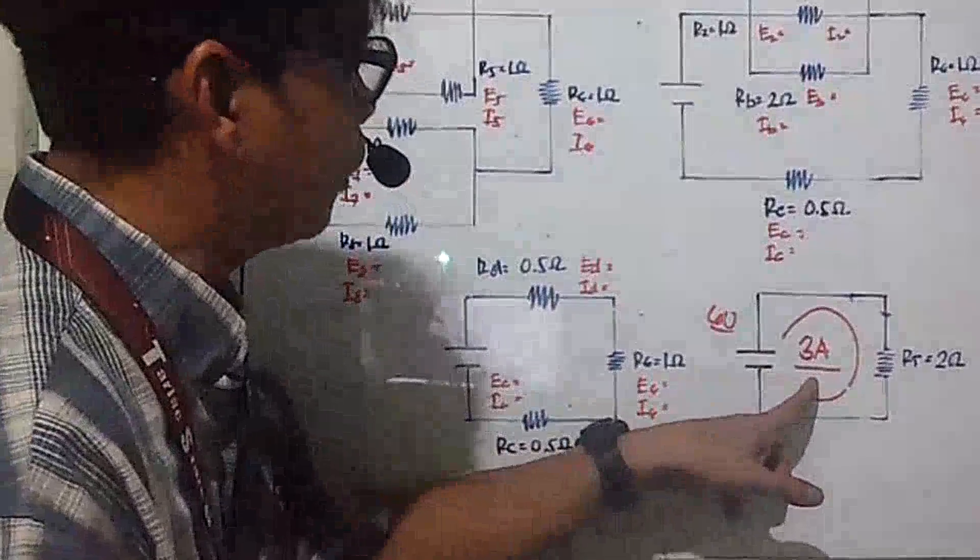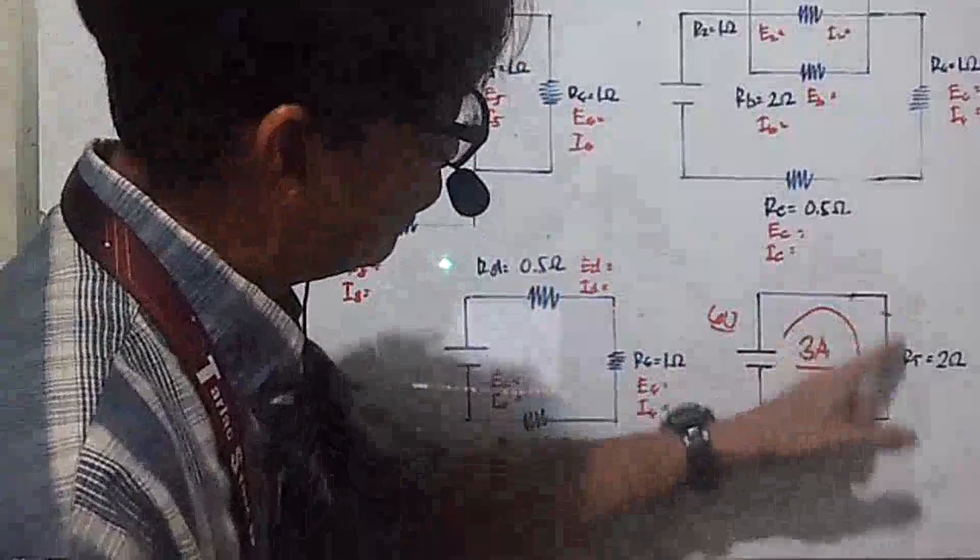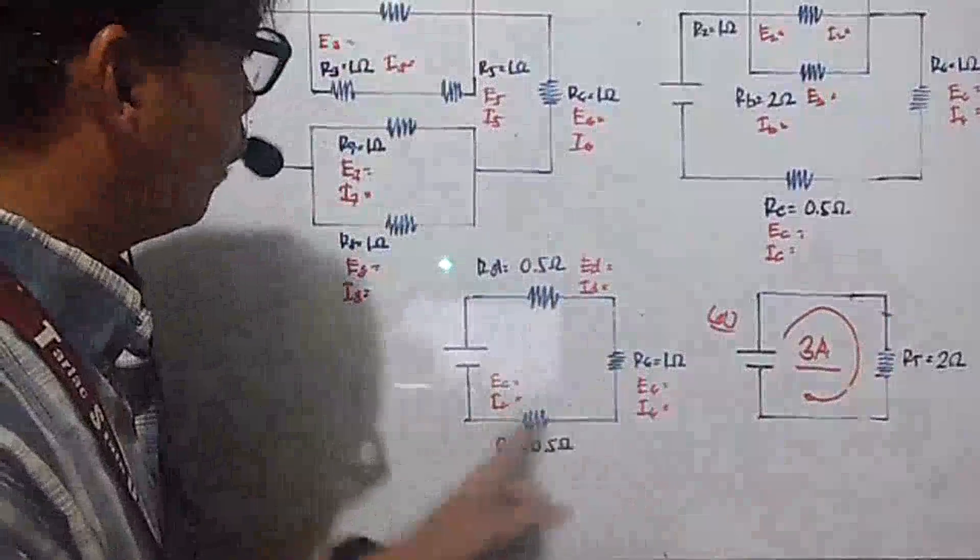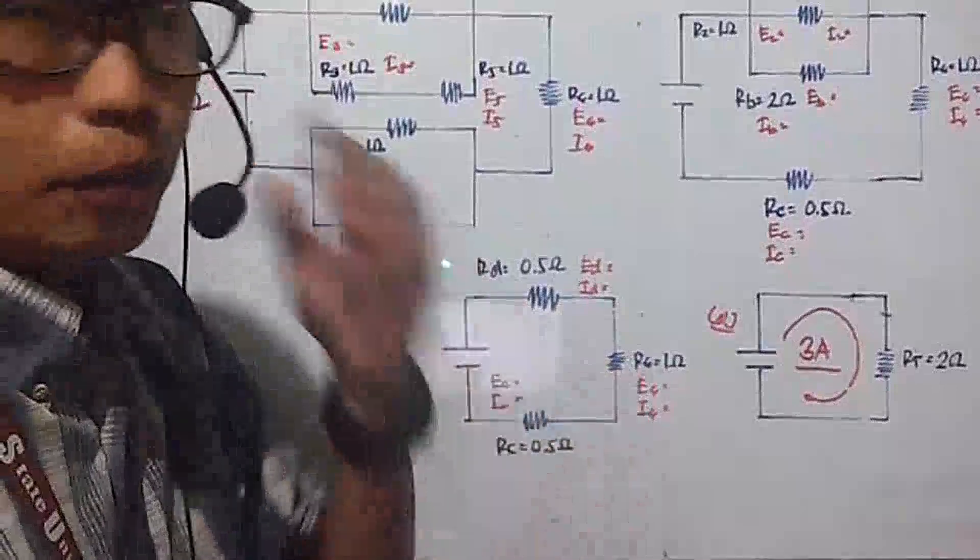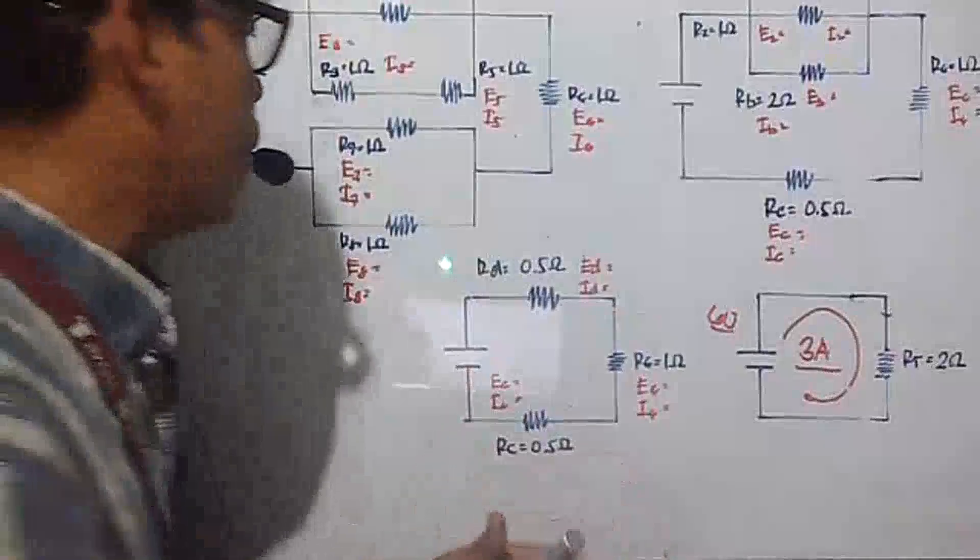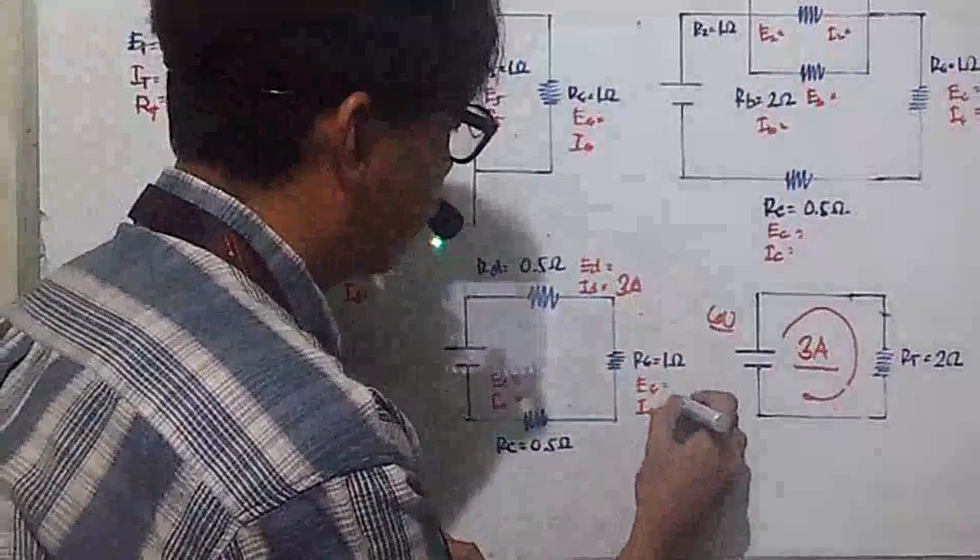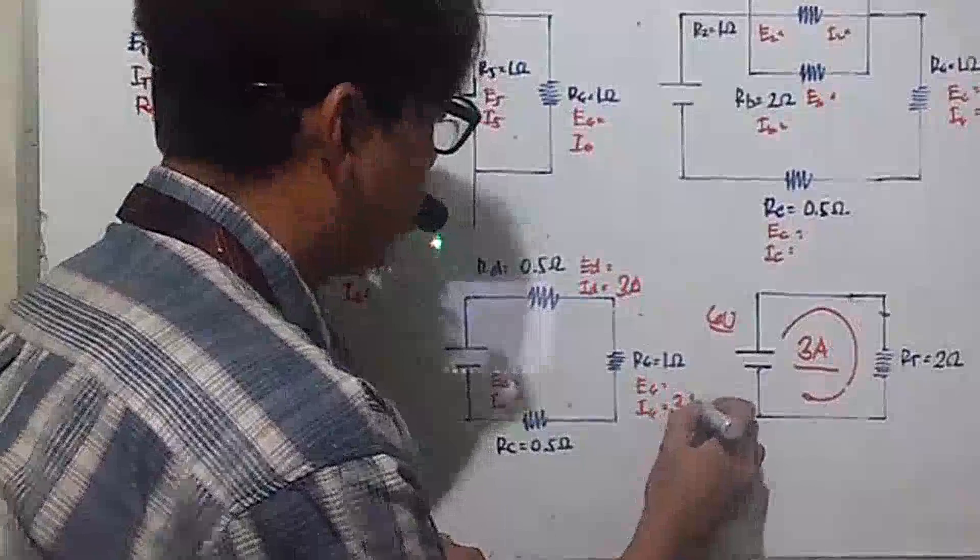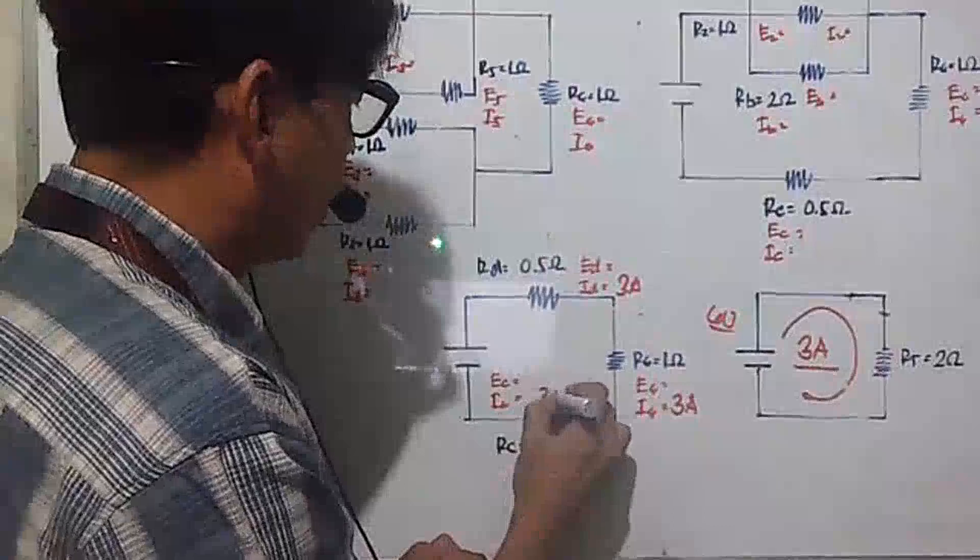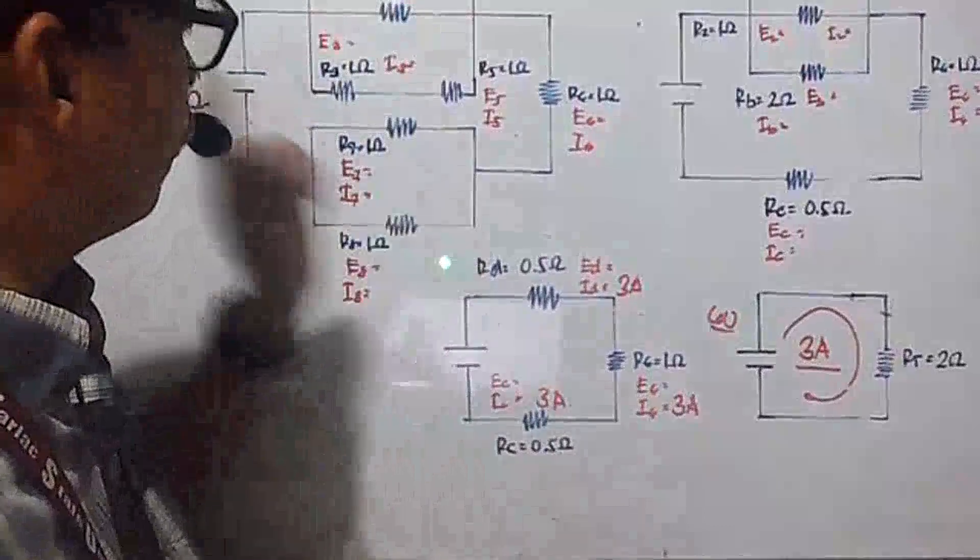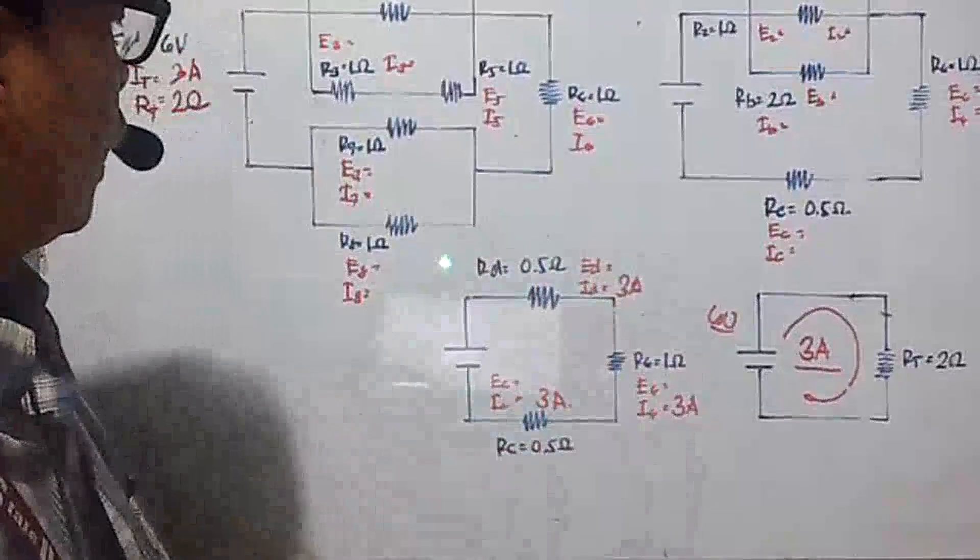So the current of this R total will be the current of these 3 resistors. So if it is 3 amperes, because it's in series, which means constant current, even if it breaks into several parts, it's one loop of current. So here, your ID is 3 amperes. Your I6 is 3 amperes. And your IC is 3 amperes.